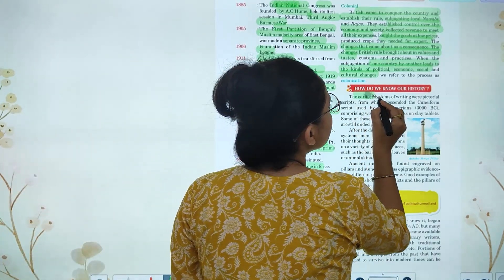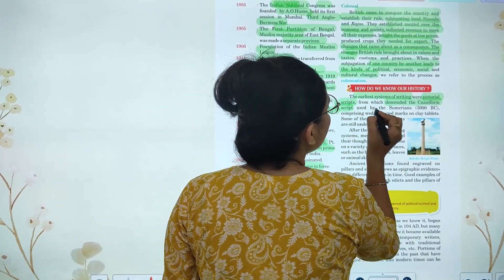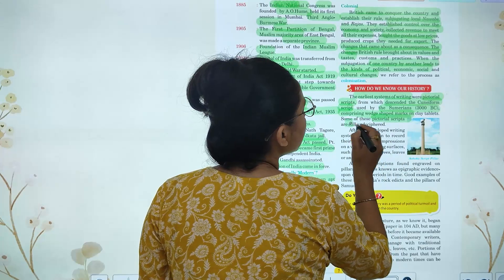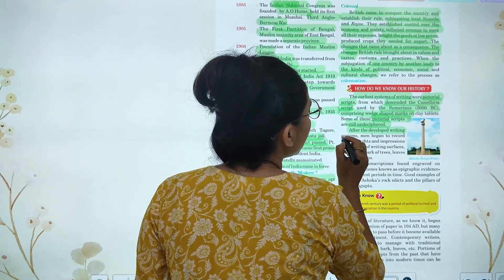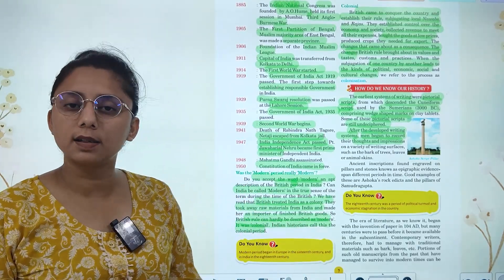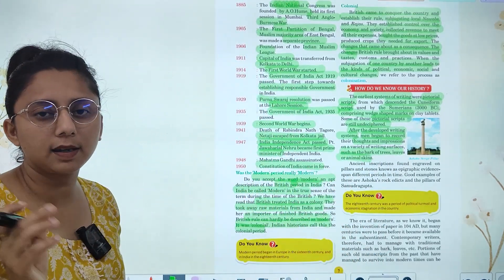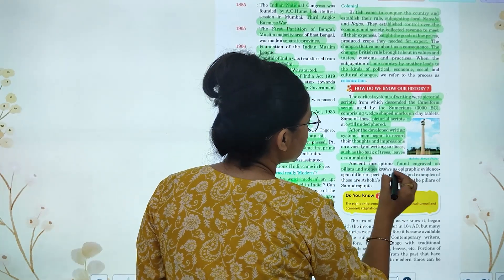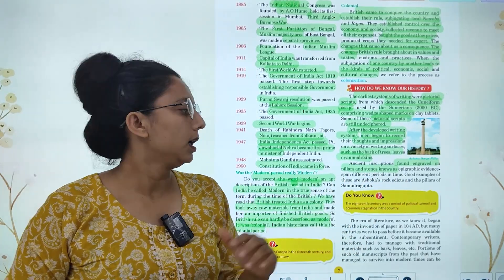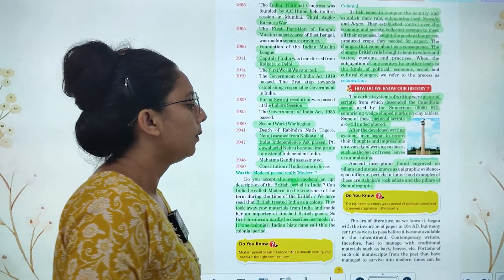How do we know about history? In the earlier system of writing, pictorial scripts were used. Sumerian writing comprised marks made on clay tablets. Some pictorial scripts are still undeciphered. After the development of a proper writing system, people began to record their thoughts and impressions. The ancient descriptions found engraved on pillars — epigraphic evidence — are a good example. Ashoka's rock edicts and pillars are excellent examples of these ancient inscriptions.